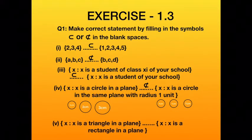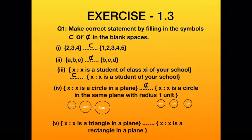The fifth part: the first set is {x : x is a triangle in the plane} and the second set is {x : x is a rectangle in the plane}. The second set will only have rectangles, and triangles will not appear there. So the triangle set is not a subset of the rectangle set. In the blank, write: not a subset.